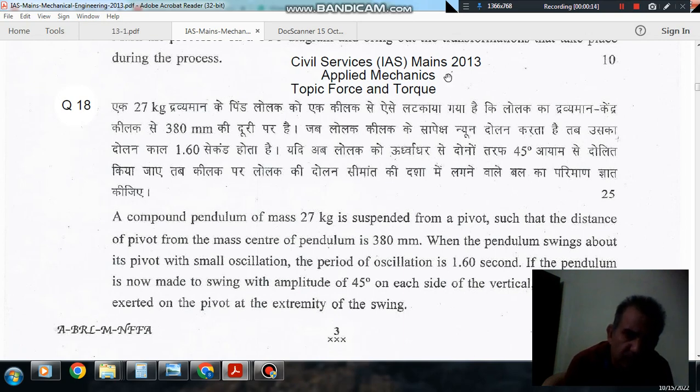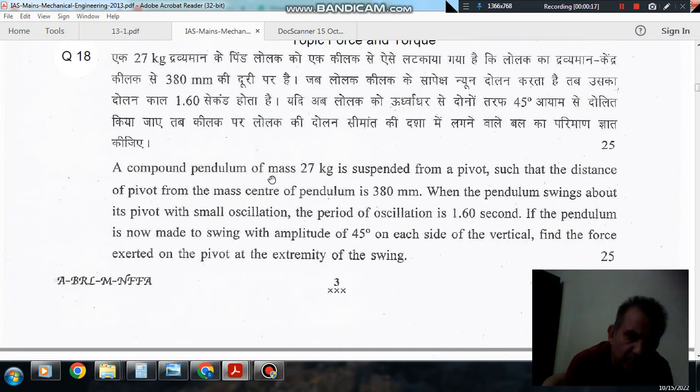Question number 18 from civil services May 2013 is: A compound pendulum of mass 27 kg is suspended from a pivot such that the distance of pivot from the mass center of pendulum is 380 mm.